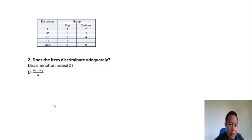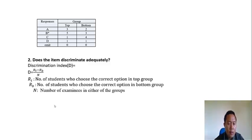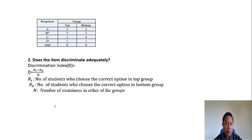The discrimination index is denoted by capital D. The formula is: RT minus RB divided by N, where RT is the number of students who got the correct answer in the top group, RB is the number of students who chose the correct answer in the bottom group, and N is the number of students in either group. Note that N here is 10, not 20 as in the difficulty index.